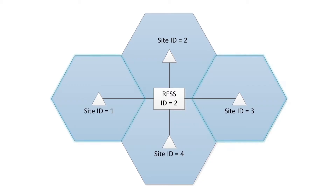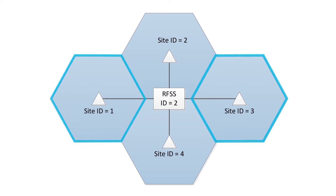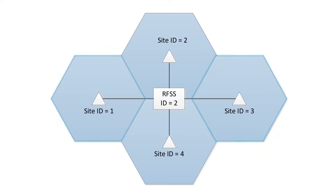However, because of terrain variation and the fact that mobile and portable radios move around, there is still a risk that at some point a mobile or portable radio intending to talk on one repeater is picked up by the other repeater using the same frequency. If a different NAC code is programmed into each repeater, it will mean the correct repeater will rebroadcast the call and the other will reject the transmission.